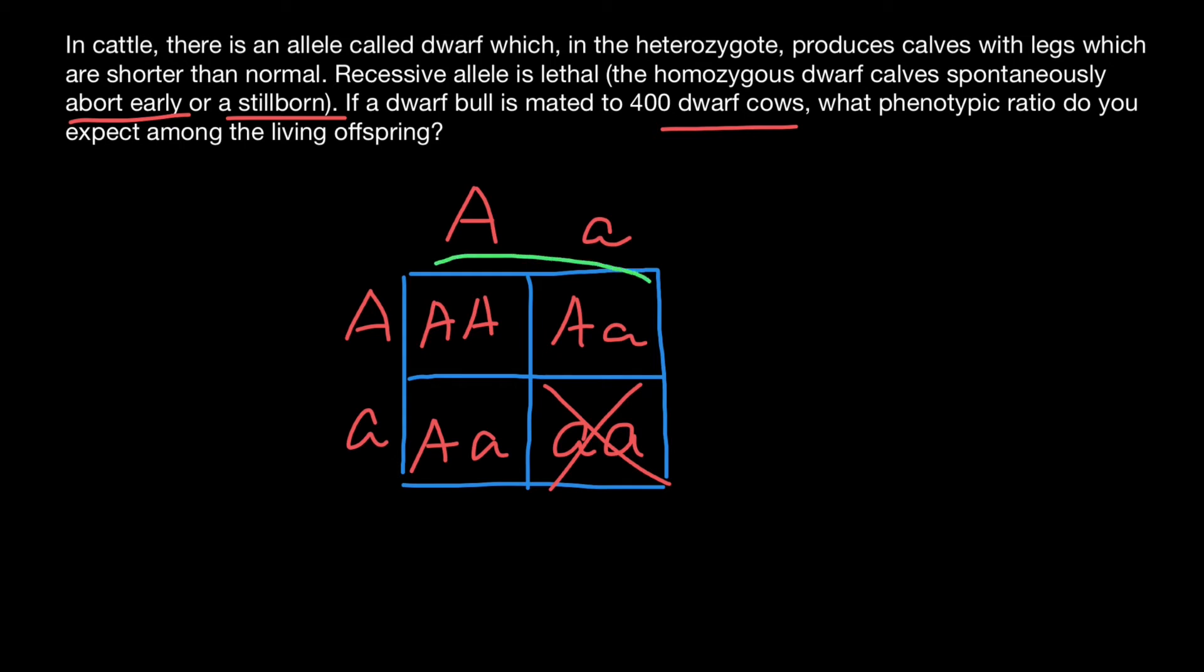We'll see two phenotypes: one phenotype would be normal and two would be dwarf. So the ratio is going to be one normal to two abnormal, which we write as 1:2. One, which is going to be capital A, capital A, to two, which is going to be capital A, small a.